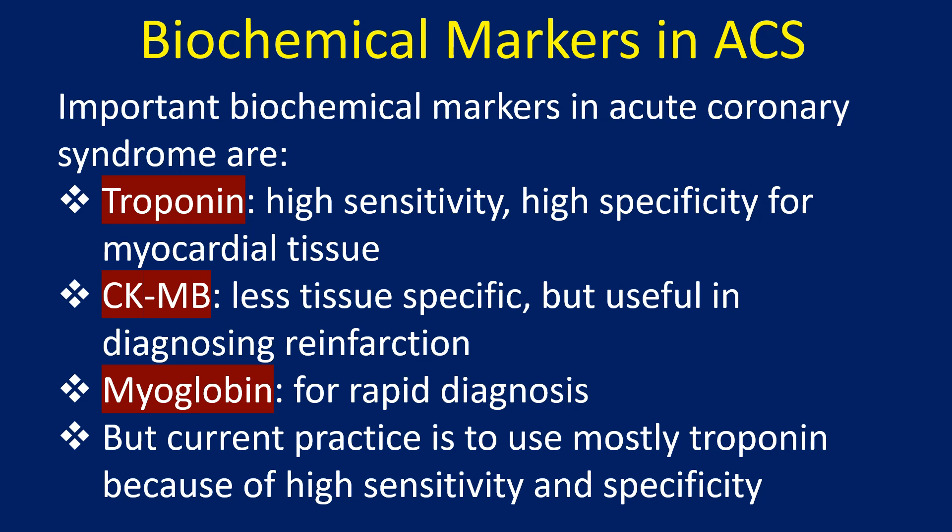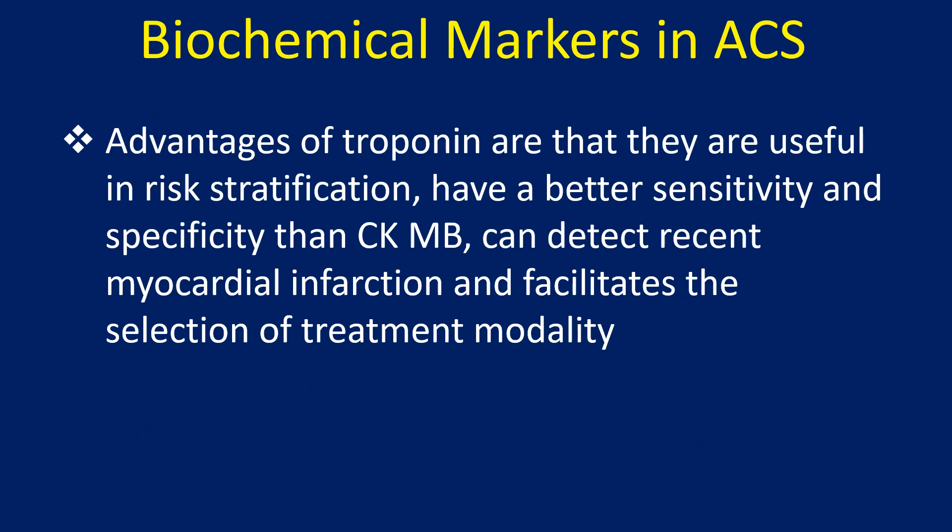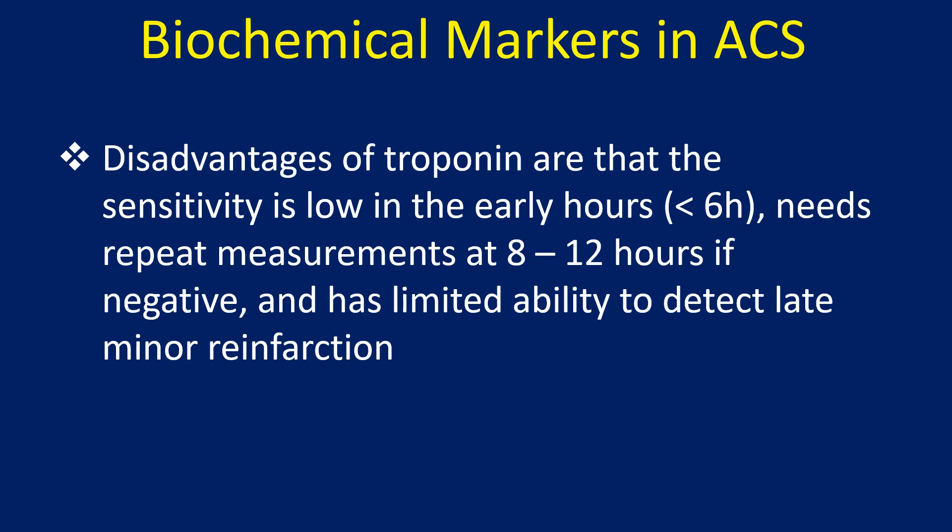Current practice is to use mostly Troponin because of high sensitivity and specificity. Advantages of Troponin are that they are useful in risk stratification, have better sensitivity and specificity than CKMB, can detect recent myocardial infarction, and facilitate the selection of treatment modality. Disadvantages of Troponin are that the sensitivity is low in the early hours.